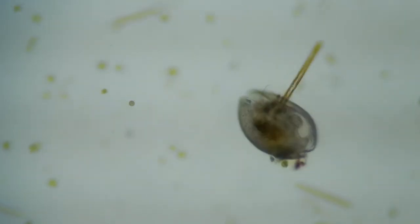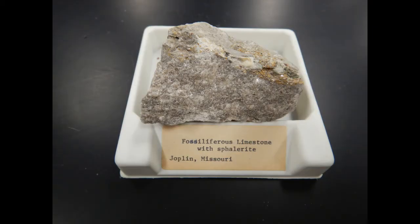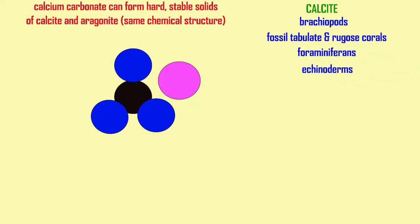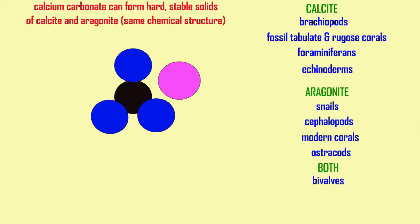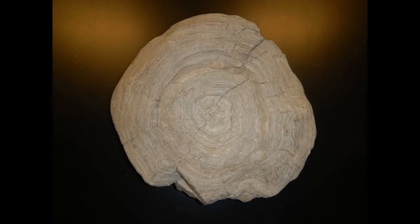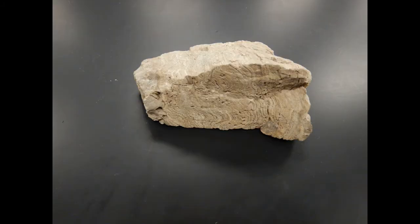Some algae — including some red algae, some green algae, and a largely extinct group known as the coccolithophores — can contribute calcium carbonate. Calcium carbonate could also accumulate in stromatolites formed by bacteria, meaning that even pre-Cambrian era rocks can have limestones if stromatolites contributed to them.